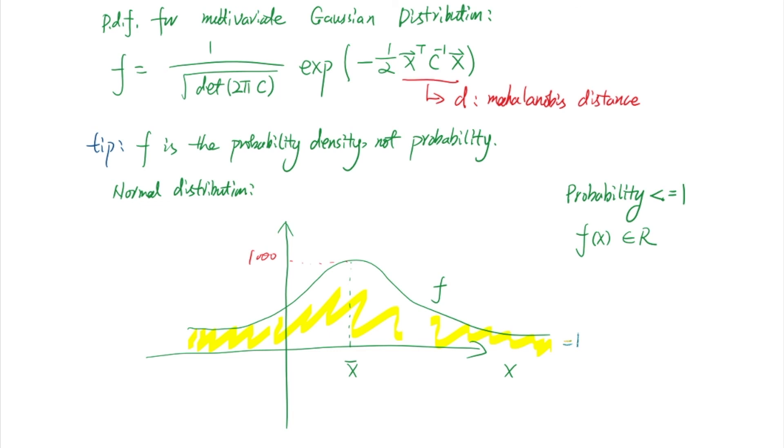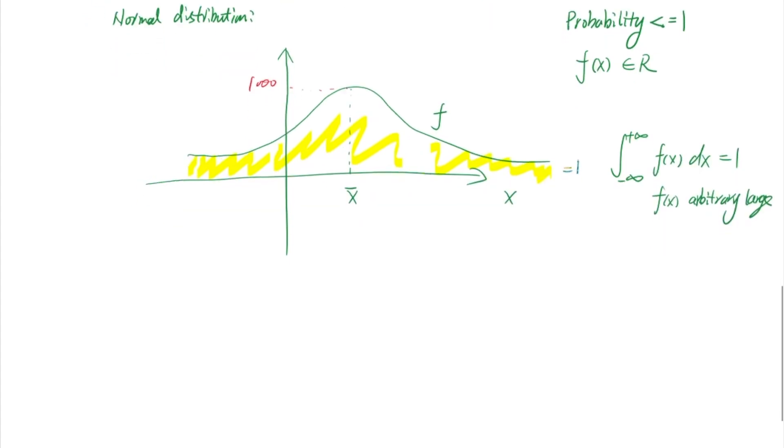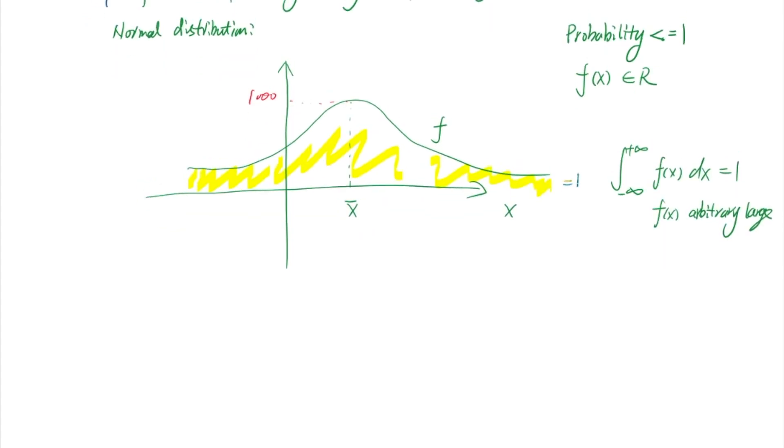Mathematically, that means the integral of f from minus infinity to positive infinity is always equal to 1, even though f can be arbitrarily large. Alright, that's pretty much the end of this video. In the next video, I'm going to introduce you the MATLAB program for Mahalanobis distance. Please check that out. Please hit the like button if you enjoyed this video. Thank you.